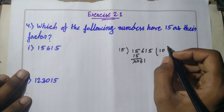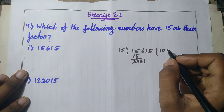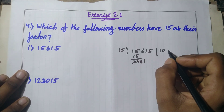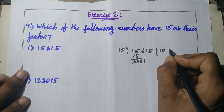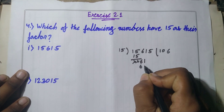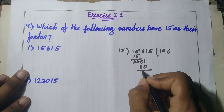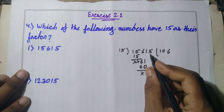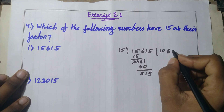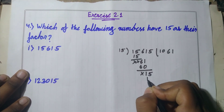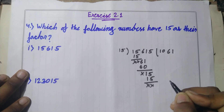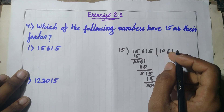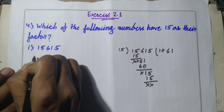15 times 4 equals 60, and 15 times 6 equals 90. The remainder is 1, then we bring down 5. One time 15 gives remainder 0. So 15,615 is exactly divisible by 15 — the answer is confirmed, and 15 is a factor of this number.